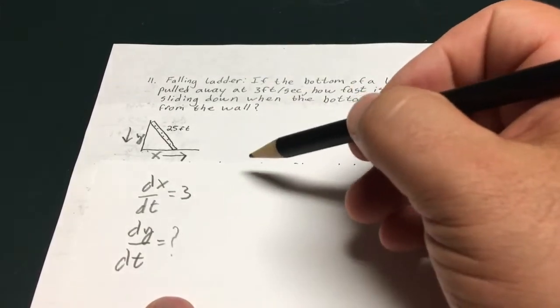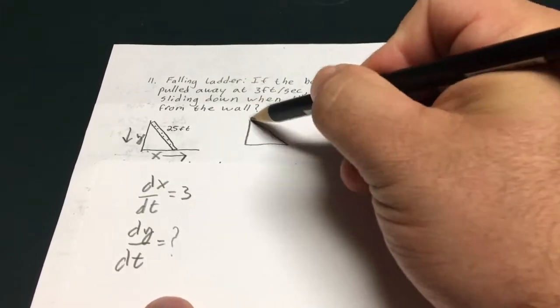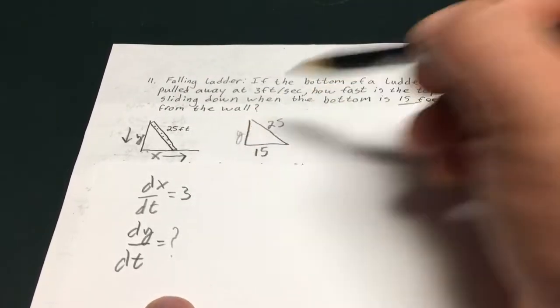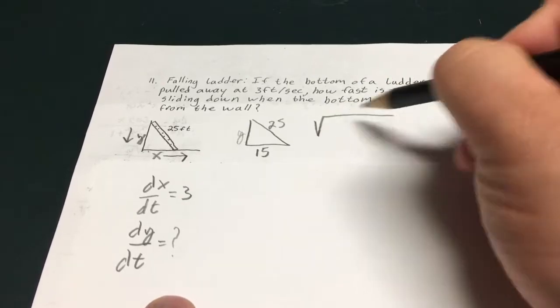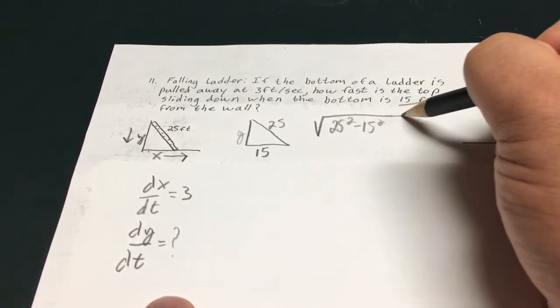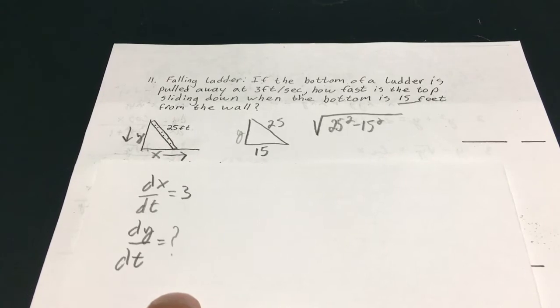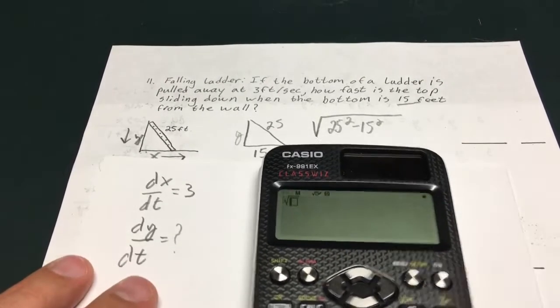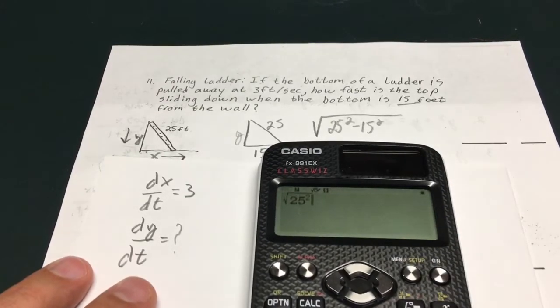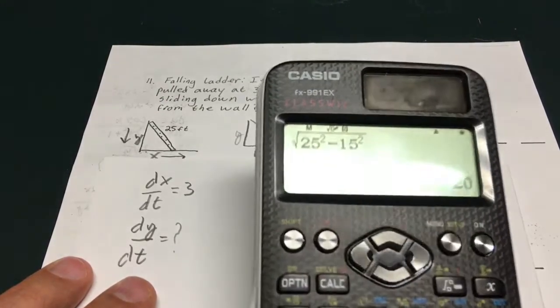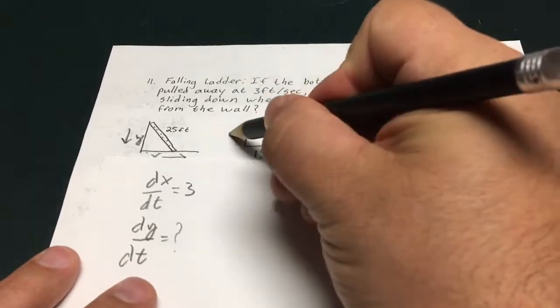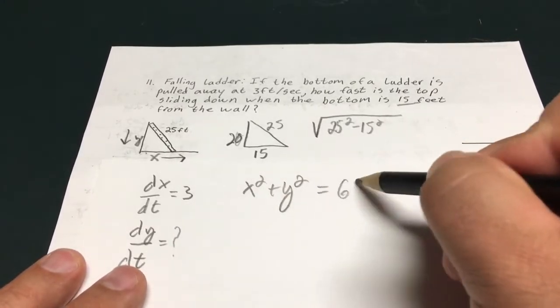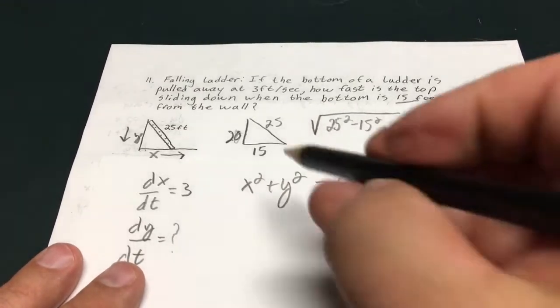So the first thing I'm going to do is set up a Pythagorean theorem. So I know that this side is 25. And then it says when the bottom is 15 feet, so when x is 15, they want to know what y is. So I'm going to go ahead and do the Pythagorean theorem. That's 25 squared minus 15 squared. That's 20. Y value is 20. Now I'm going to set up my derivative, which is going to give me x squared plus y squared equals 625.